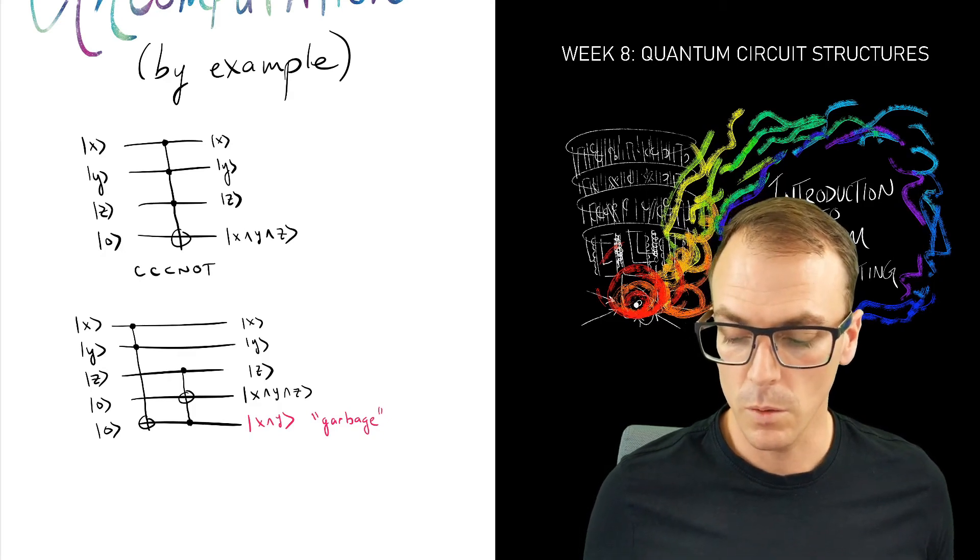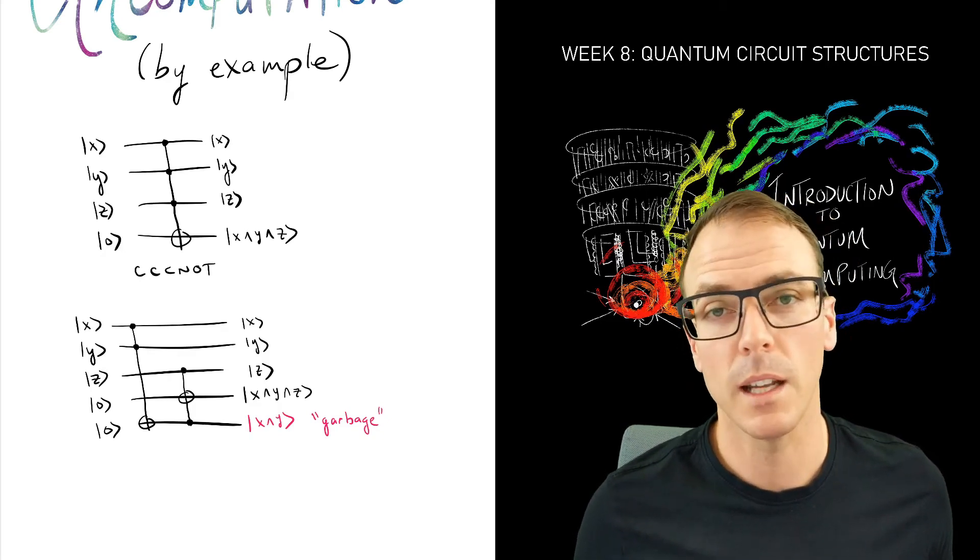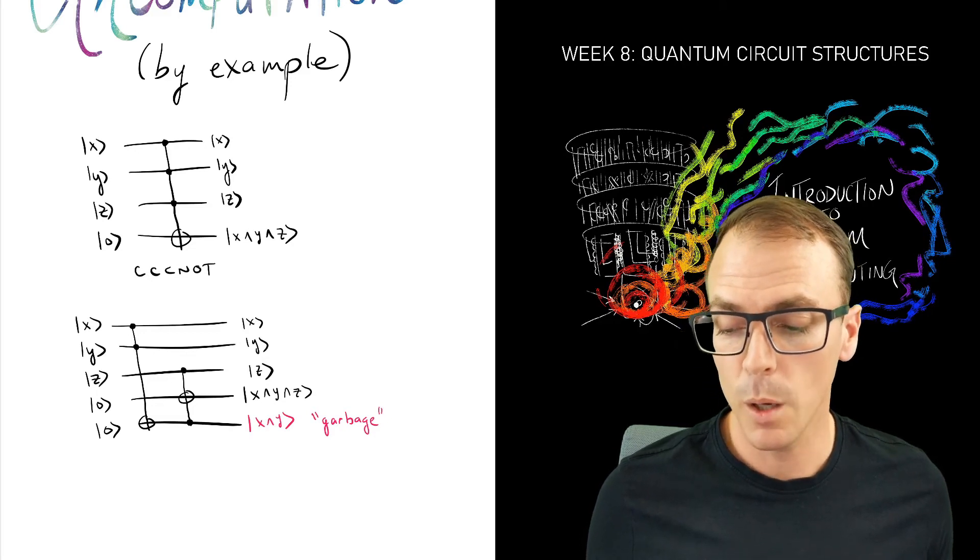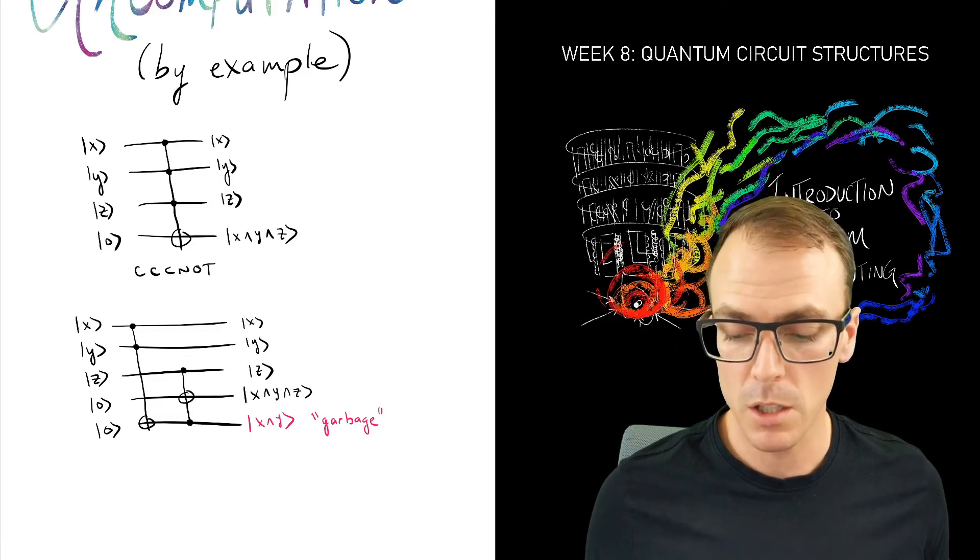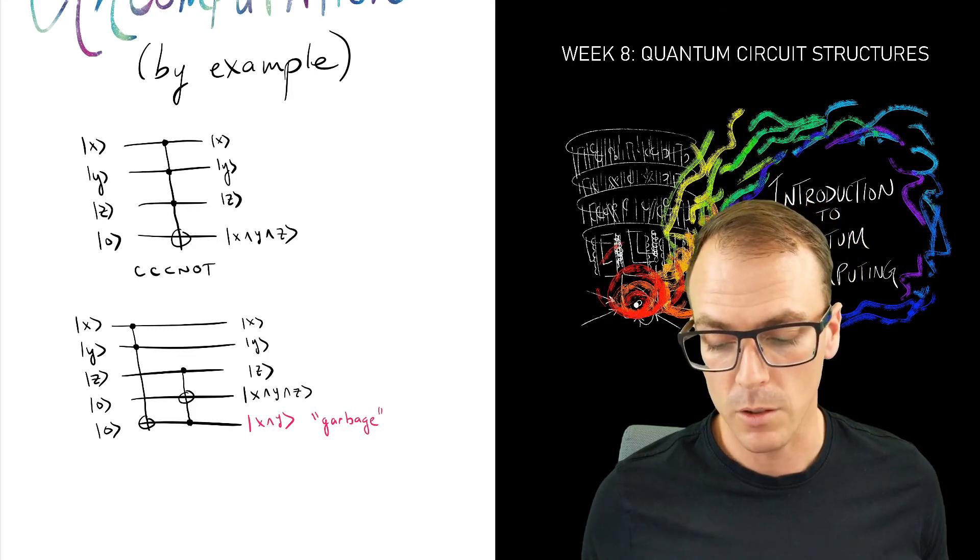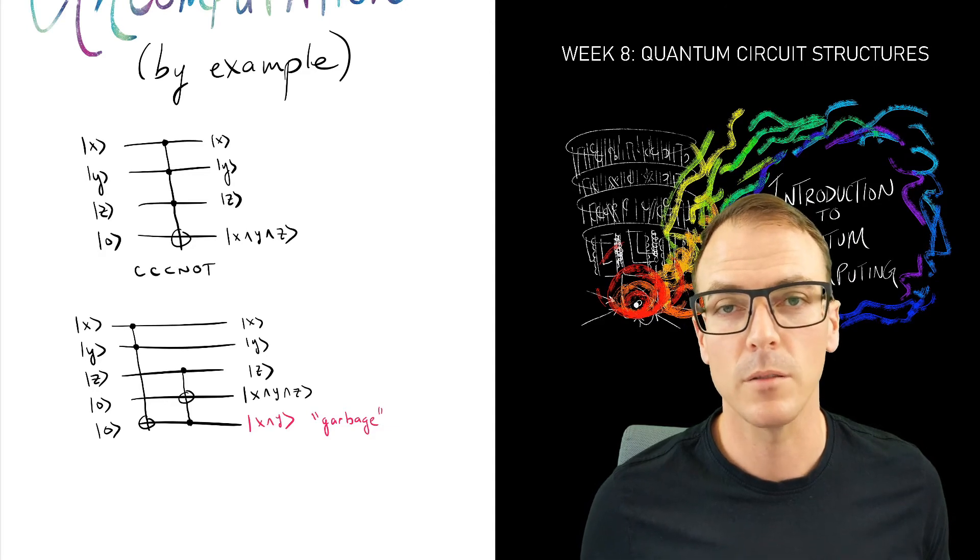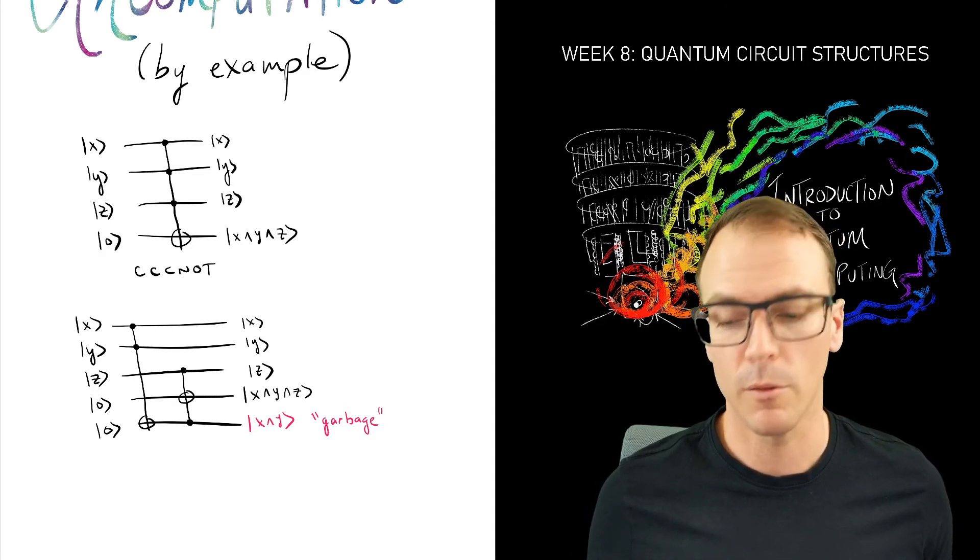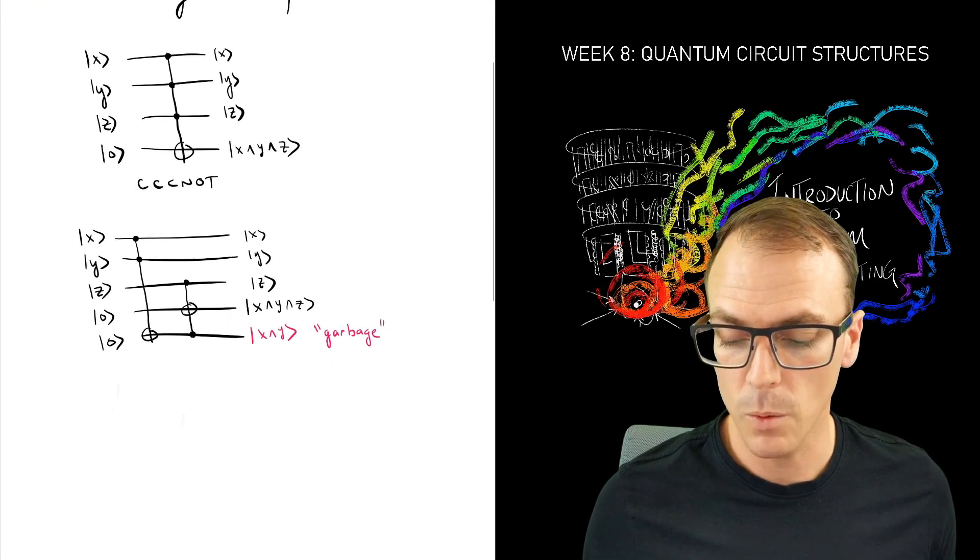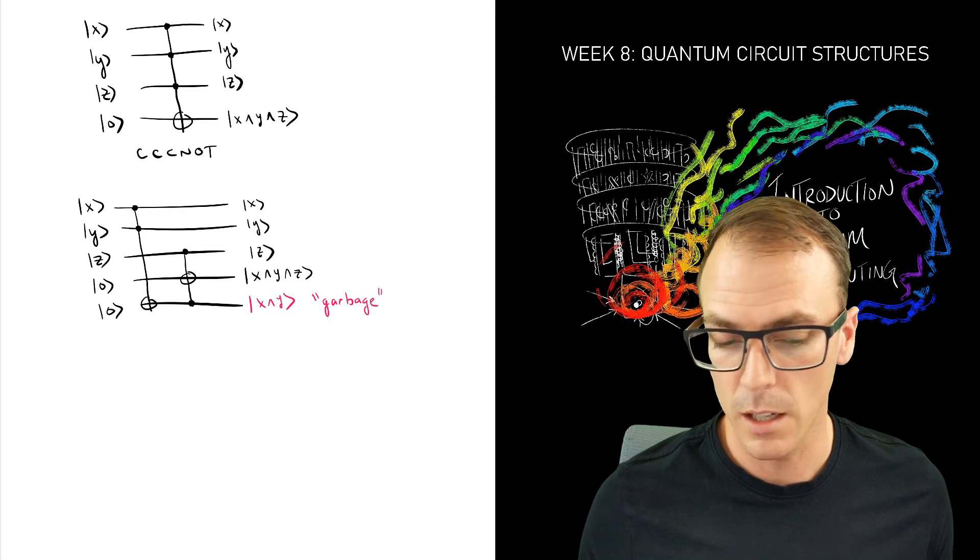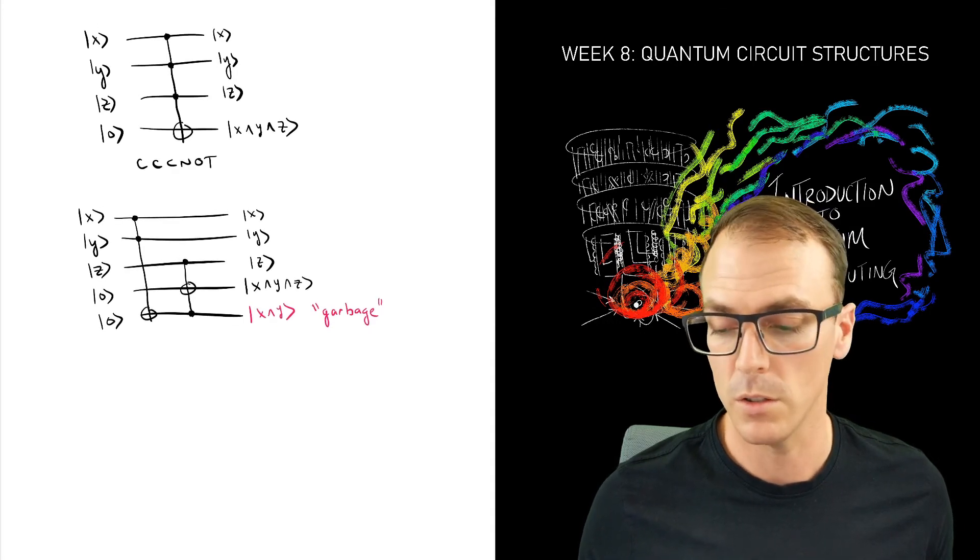So we don't care what state that qubit is in. However, there's a problem in that if I want to perform this circuit in superposition, then my data and my output is going to be entangled with that garbage. So I can't just throw out the garbage because I'm throwing out information. I need a way to return that garbage state to its original state.